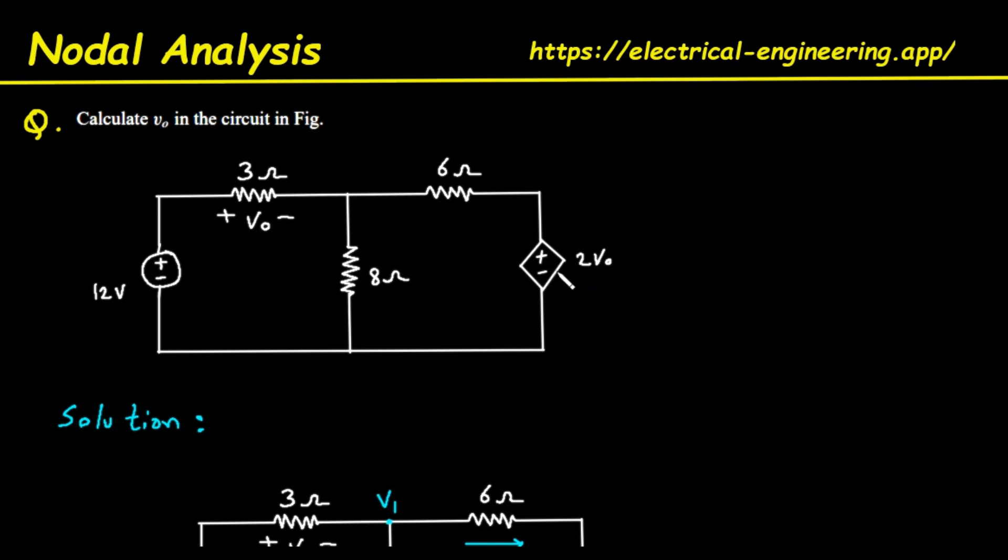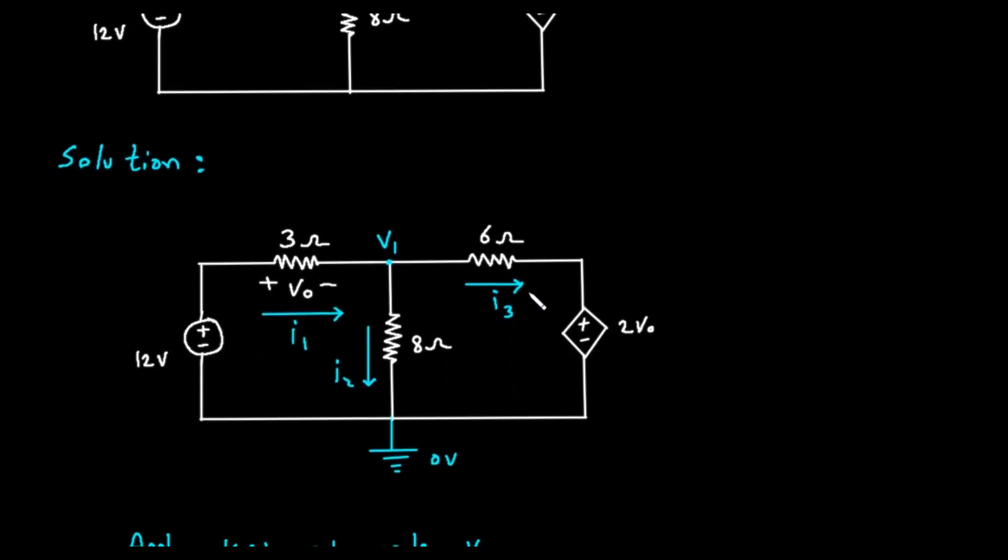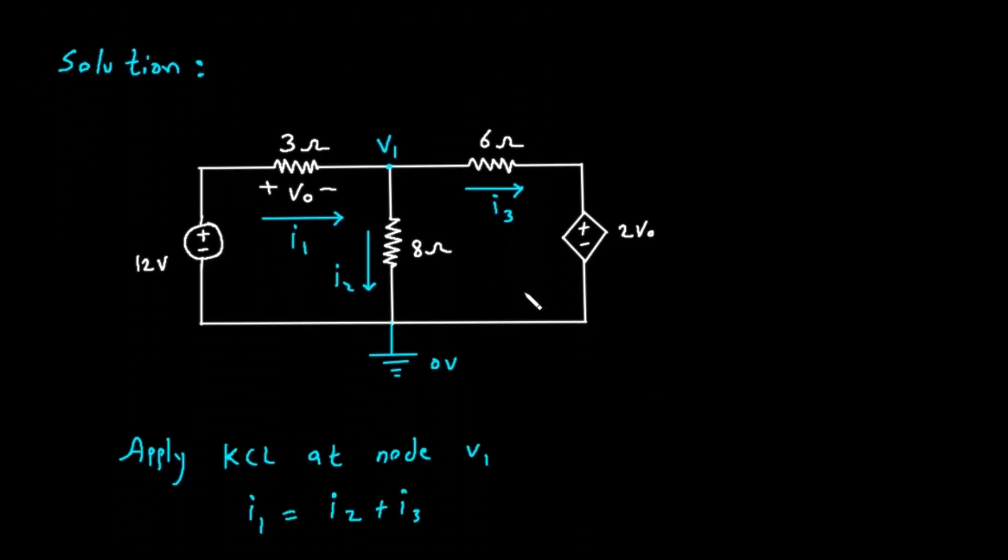To solve this circuit, we will use a technique called nodal analysis. The basic idea is to find the voltage at all the key connection points, which we call nodes, relative to a common reference point. First, we identify the nodes. There is a main node at the top where the 3 ohm, 8 ohm, and 6 ohm resistors all connect.